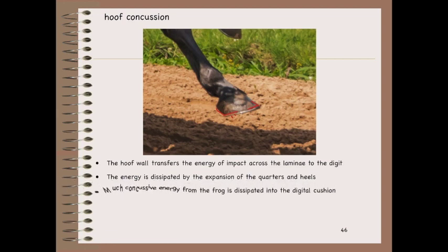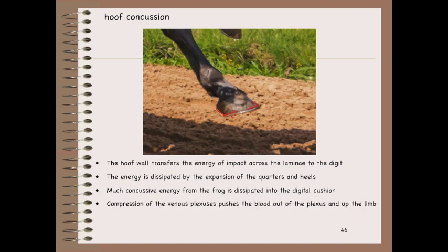Upon concussion, a lot of energy from the frog is dissipated into the digital cushion. It's important to have the frog in contact with the ground for this dissipation of impact energy — farriers should not trim the frog up off the ground. Compression of the venous plexus pushes blood out of the plexus and up the limb, acting somewhat like hearts helping pump blood up the limb. These are the important things to remember that occur during hoof concussion.